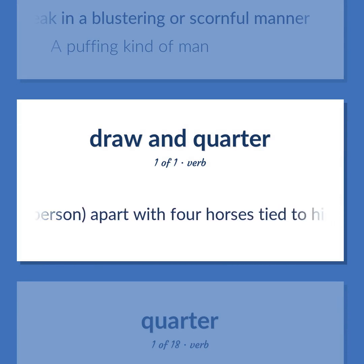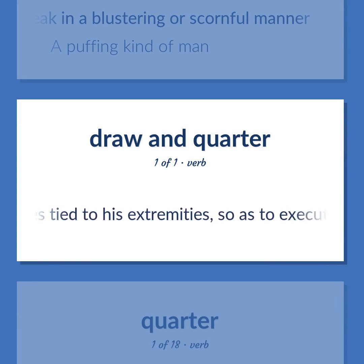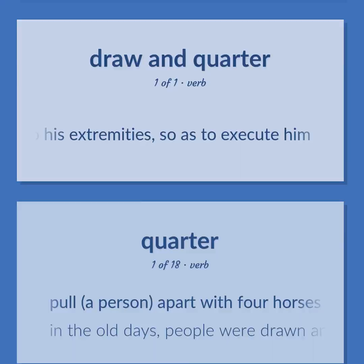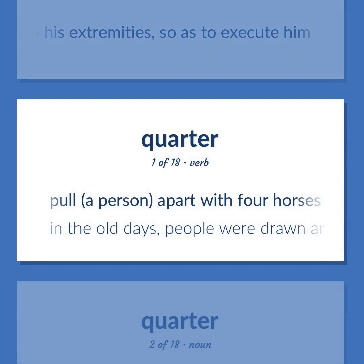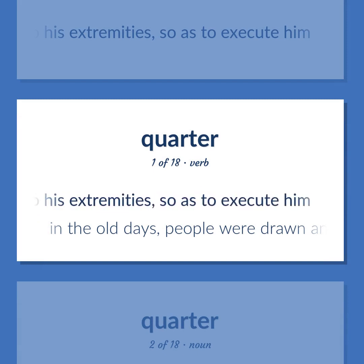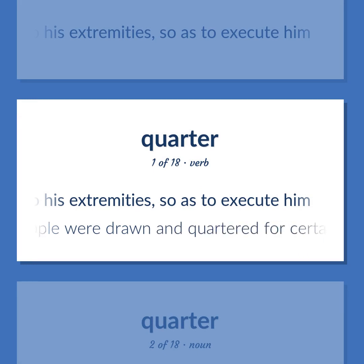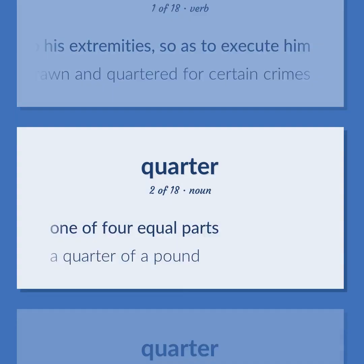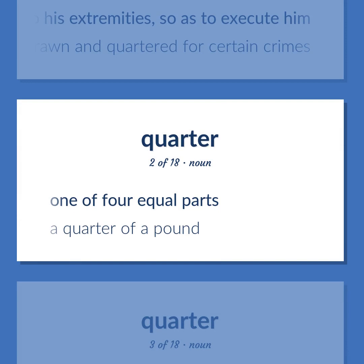Pull a person apart with four horses tied to his extremities so as to execute him. In the old days, people were drawn and quartered for certain crimes. One of four equal parts. A quarter of a pound. The rear part of a ship.